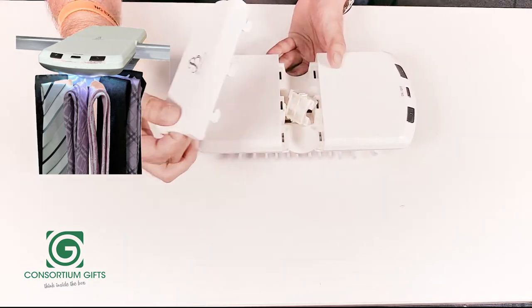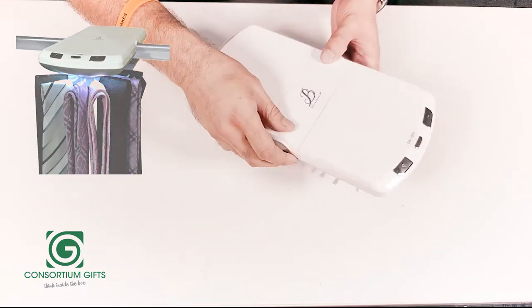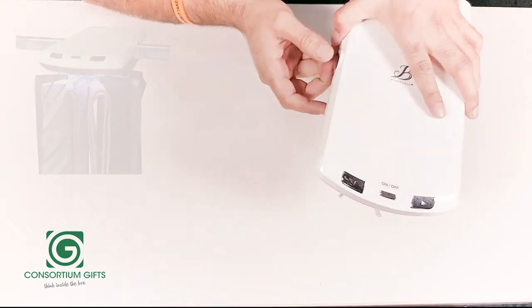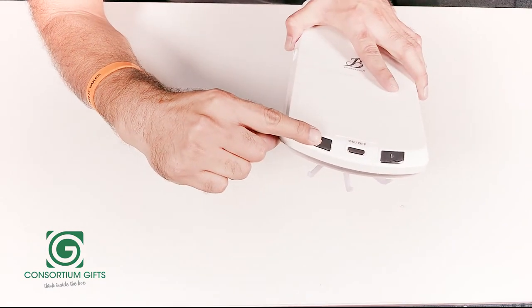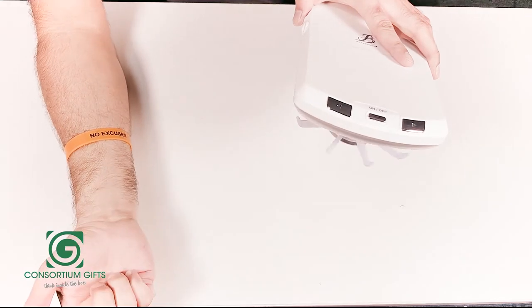You just tighten it up and fix it in place, and you have a ready-to-go product with 30 ties. Simple operation: you press this button, it starts rotating, and you can pick which tie you want.